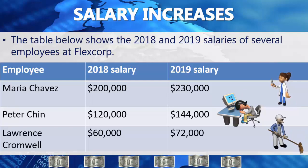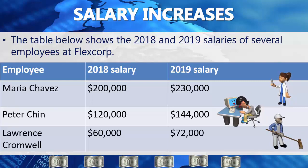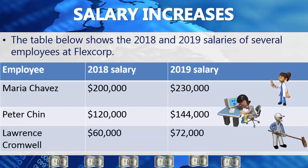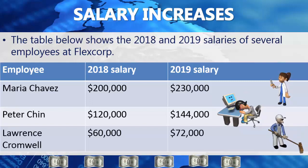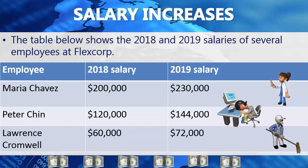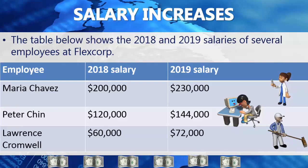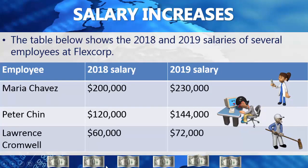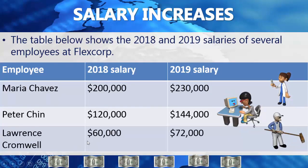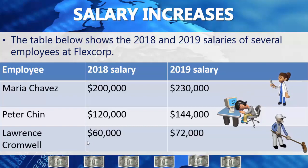The table below shows the 2018-2019 salaries of several employees of FlexCorp. Employee Maria Chavez earned a salary of $200,000 in 2018, and in 2019 her salary was $230,000. Peter Chin's salary in 2018 was $120,000, while in 2019 it went up to $144,000. Lawrence Cromwell's salary in 2018 was $60,000, and it went up to $72,000 in 2019.